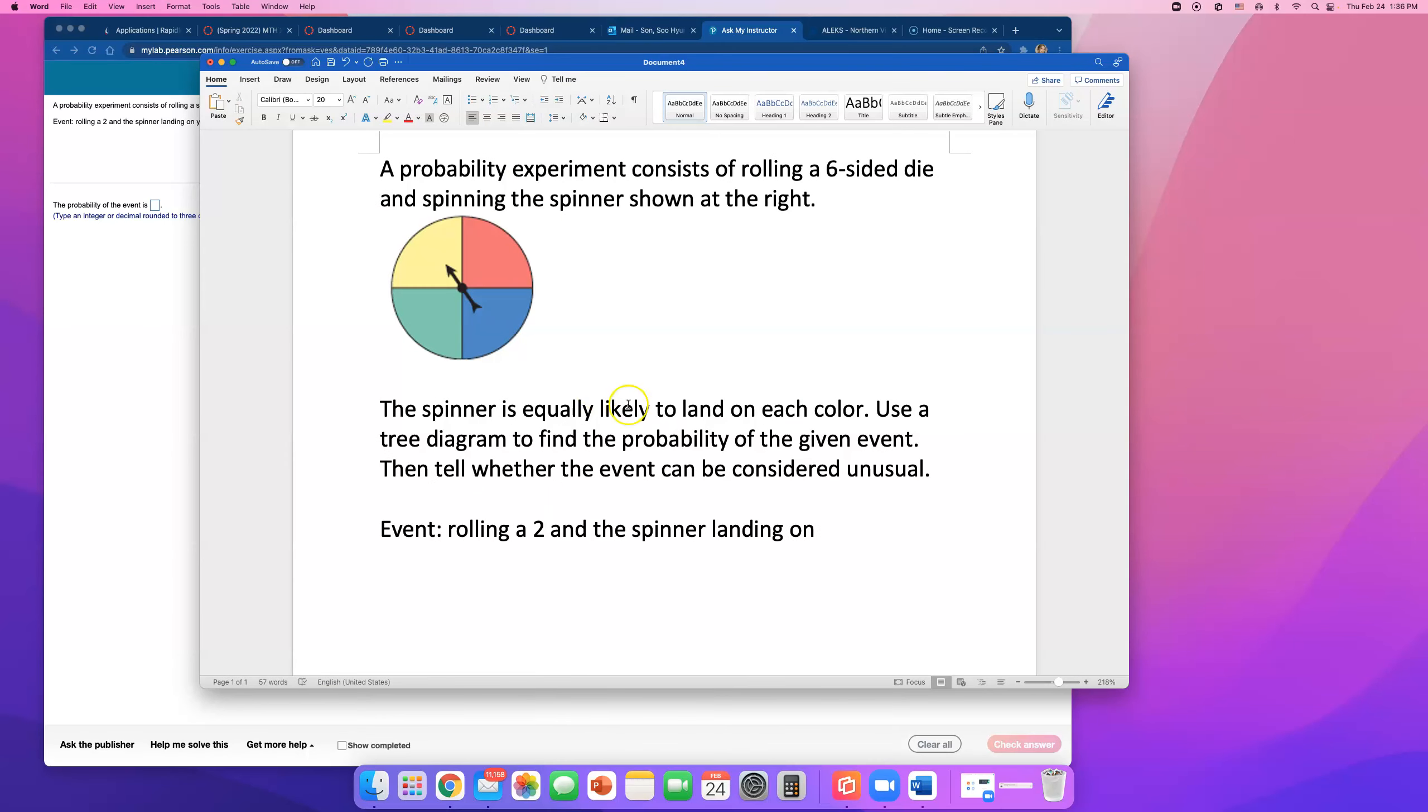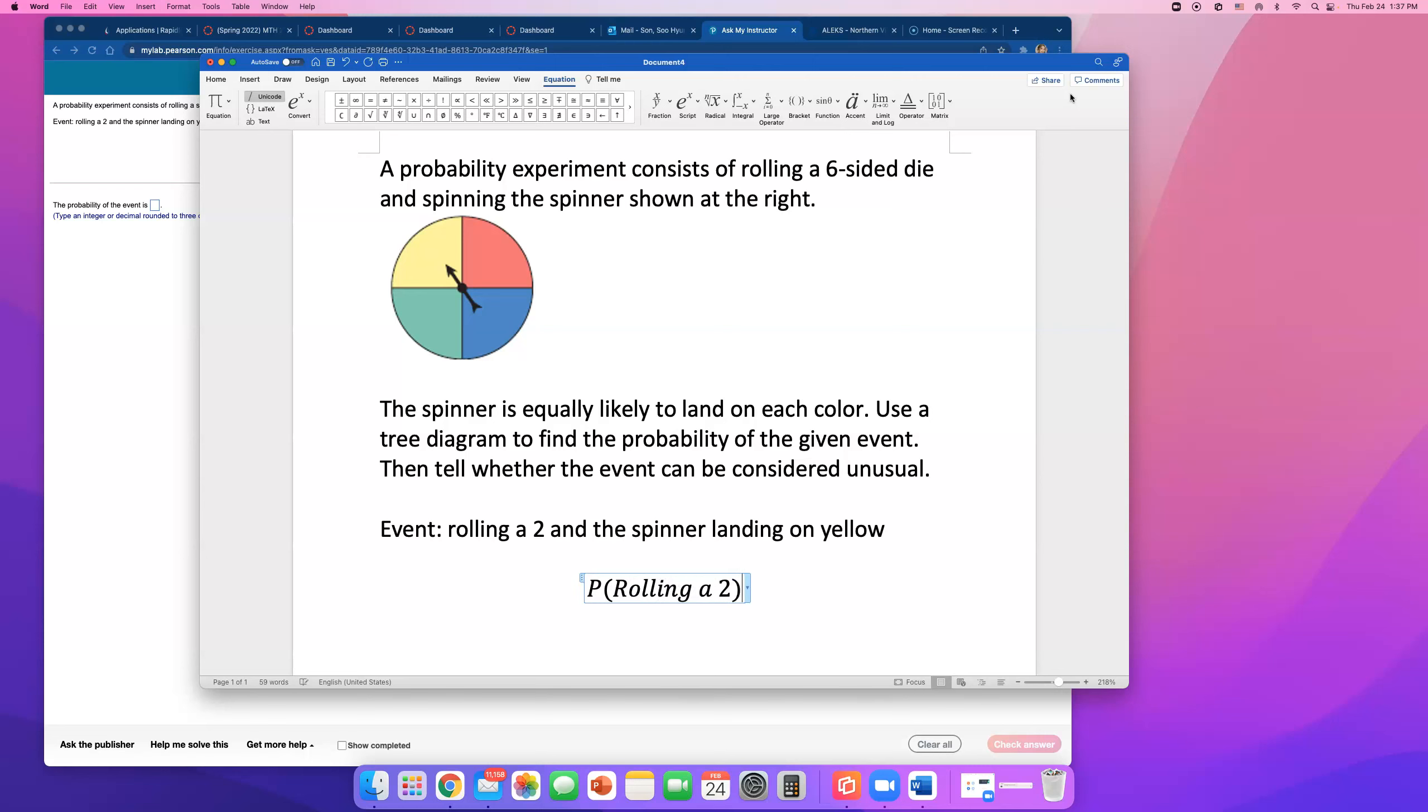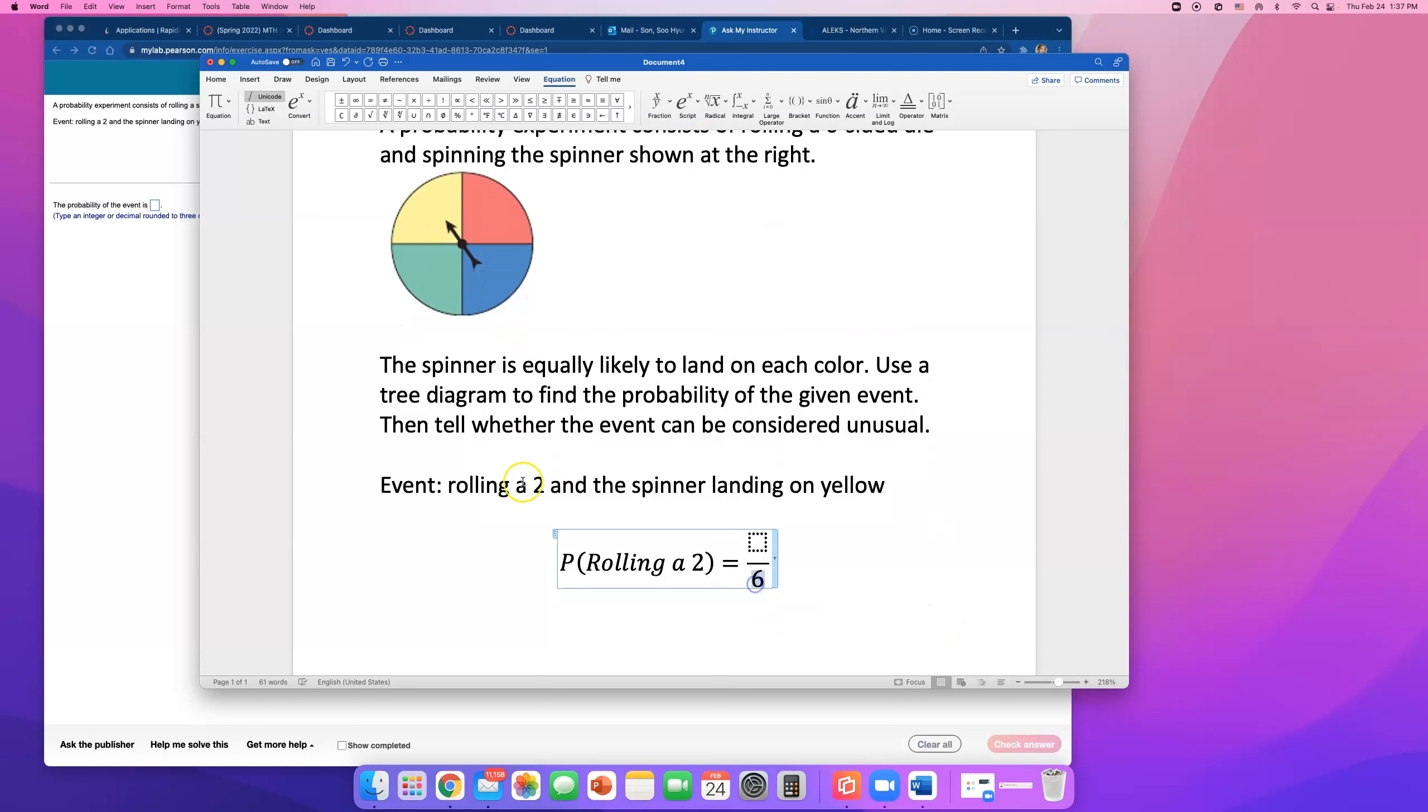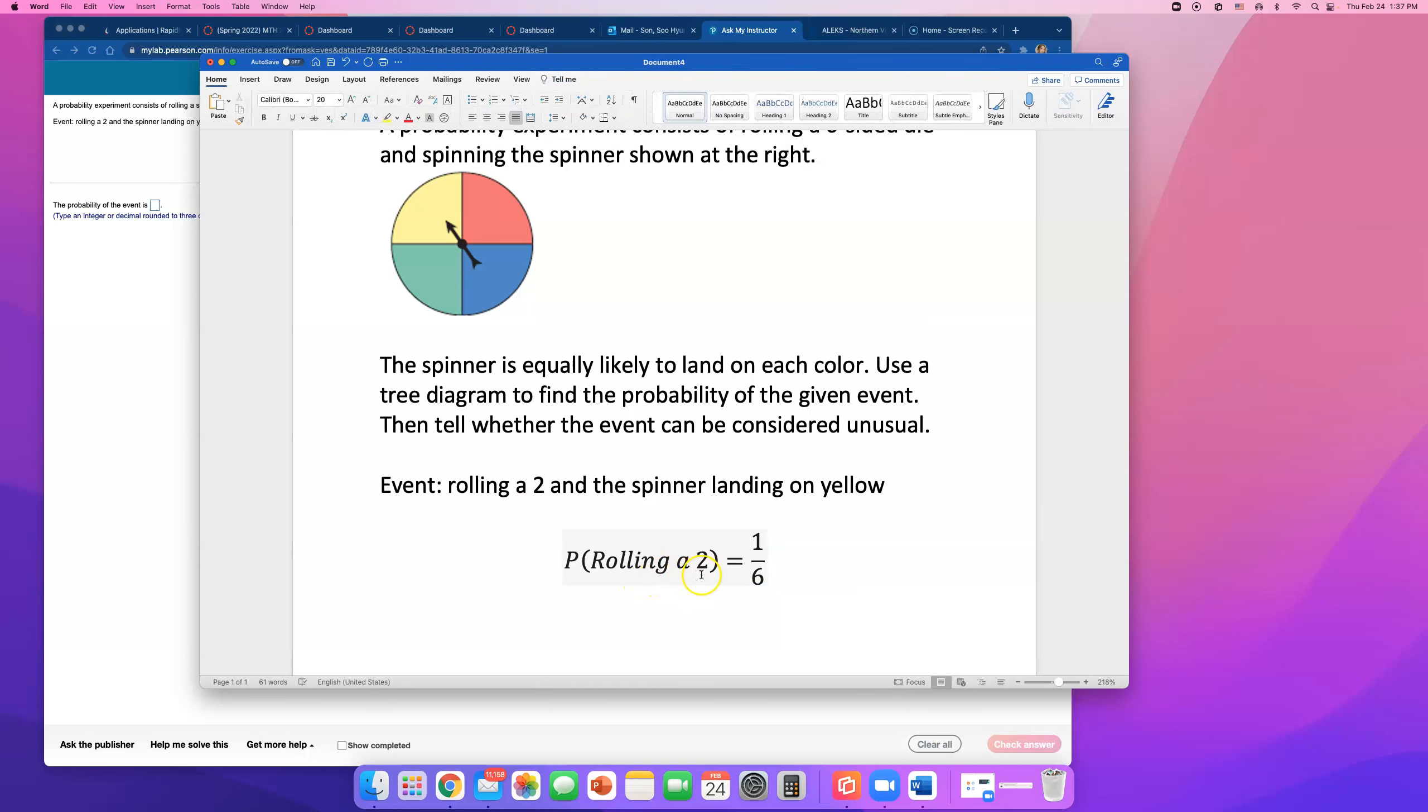Okay, so first of all, what is the probability that I will roll a six-sided die and roll a 2? First of all, the dice or die has six faces in total, right? And how many of those faces have 2 on it? Only one. So rolling a 2 on a die roll is 1 out of 6. The probability is 1 out of 6.